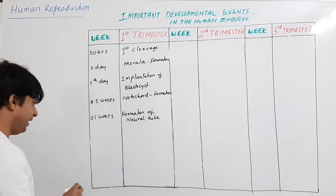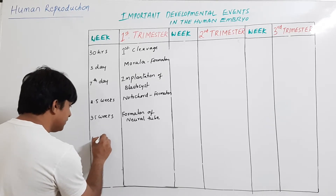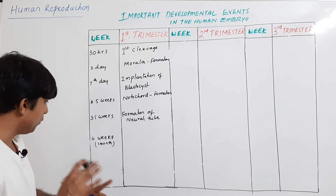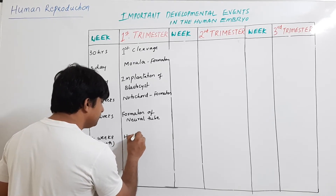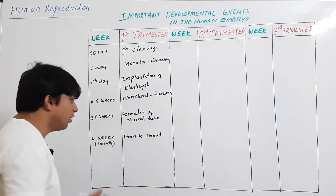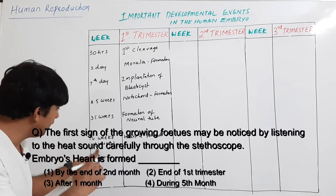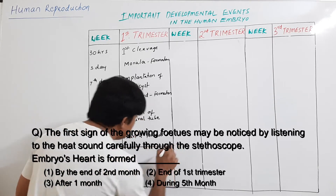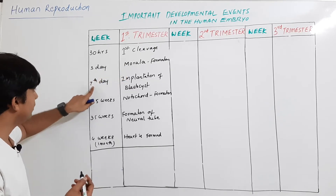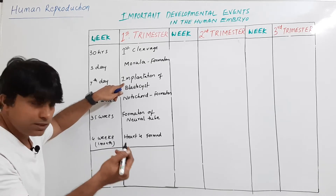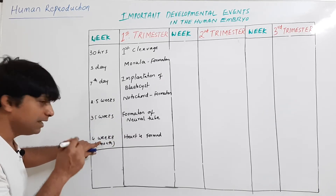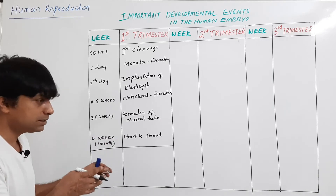At the end of four weeks — that is, the end of the first month — the heart is formed. The first sign of the growing embryo is observed with the formation of the heart. So to recap: 30 hours after fertilization, cleavage takes place; on the third day, morula formation; on the seventh day, implantation of the blastocyst; at 2.5 weeks, notochord formation; at 3.5 weeks, neural tube formation; and at the end of the fourth week, the heart is formed.